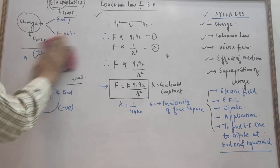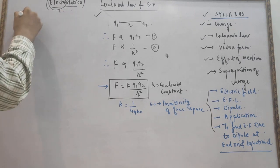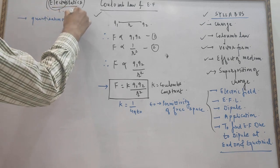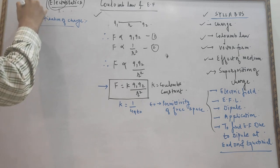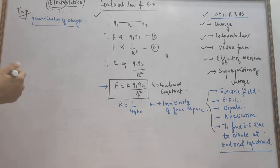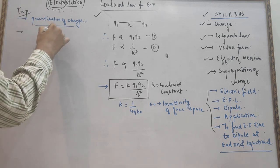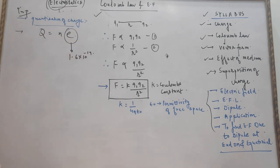What are the properties of charges? The first basic property is quantization of charge. Charges cannot be created or destroyed — they can simply be transferred from one place to another. This is the most important property of charge, often asked in board examinations. Quantization of charge means charge given to any body is an integer multiple of the basic charge, equal to 1.6 × 10⁻¹⁹ coulombs.